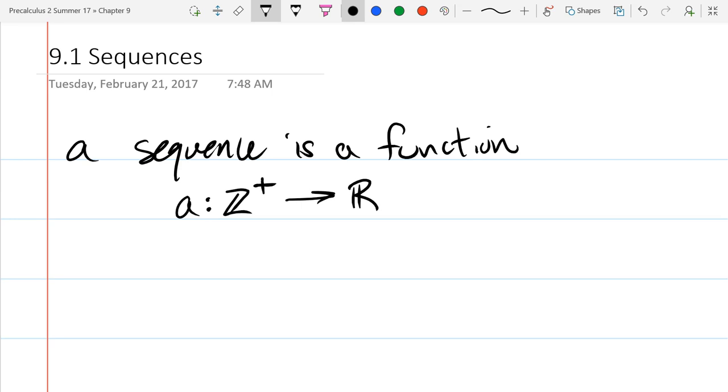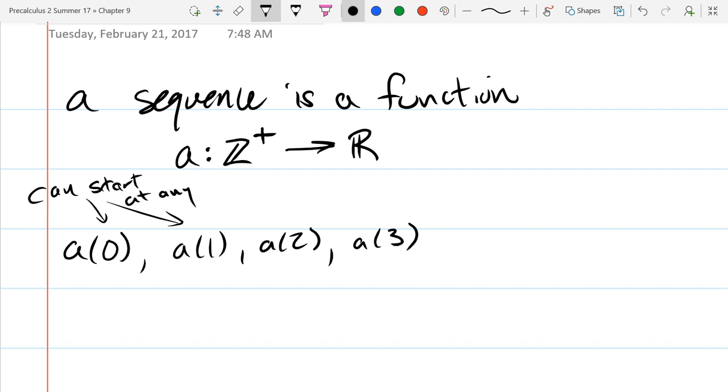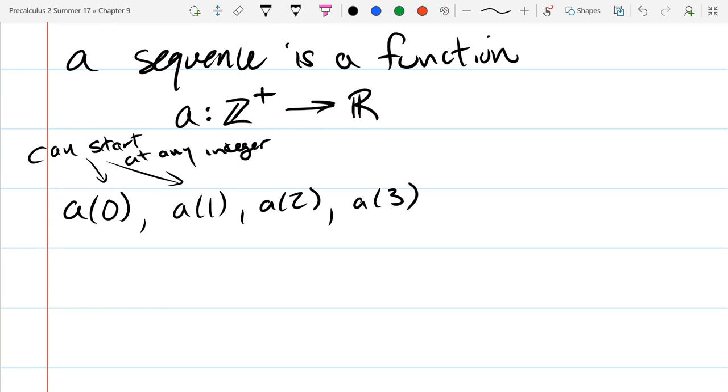And the output, or the range, is going to be real numbers, and the first terms of a sequence, so you can write out this sequence, if you write it in function notation, I'm generally going to start at 0 or 1. So this would be the first four terms, sometimes you start at 0, sometimes you start at 1. You actually can start at any integer you want, you could start at like negative 72, it's a little bit silly, you should generally try to start at 0 or 1, so almost all these sequences I write down, they're going to start at 0 or 1.